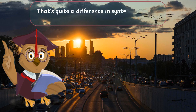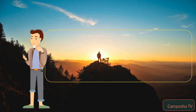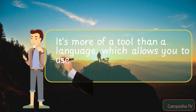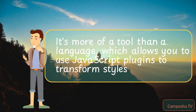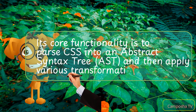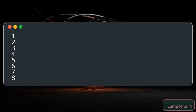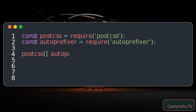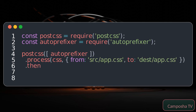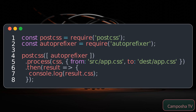That's quite a difference in syntax. And what about PostCSS? PostCSS is a bit different from the others — it's more of a tool than a language, which allows you to use JavaScript plugins to transform styles. Its core functionality is to parse CSS into an abstract syntax tree (AST) and then apply various transformations. Here's how you might use a PostCSS plugin in a JavaScript file. This example shows a PostCSS setup that uses the auto-prefixer plugin to automatically add vendor prefixes to CSS rules. It's powerful because you can write standard CSS and then apply numerous transformations and optimizations.